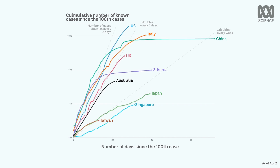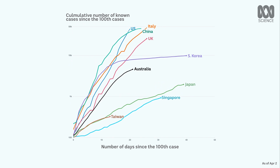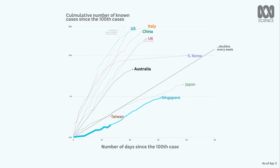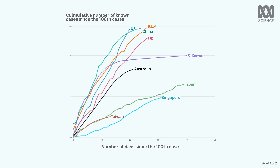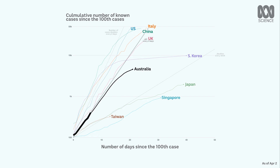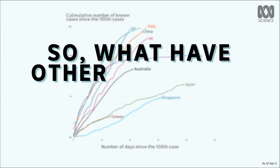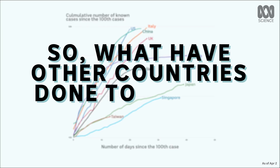Let's zoom in further to when the virus first takes off. What we're ideally looking for are lower trend lines, more like Singapore and less like Italy. If the rate that people are being infected is slower, that means fewer people are seriously ill at the same time, and that puts less pressure on hospitals. As you can see, Australia is still in the earlier stages of its outbreak. It hit 100 cases 51 days after China and 16 days after Italy.